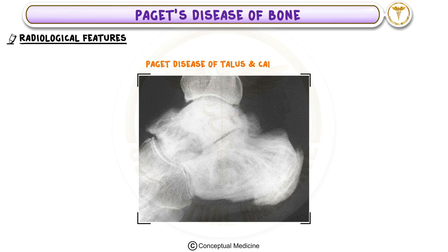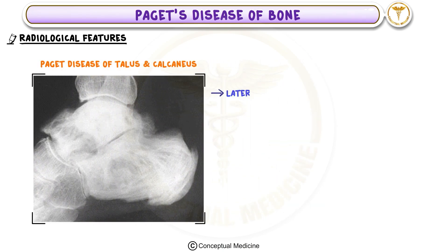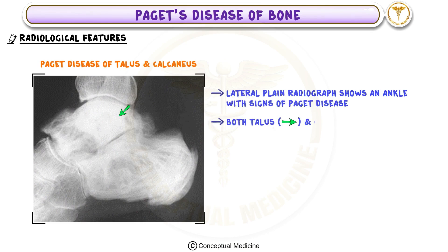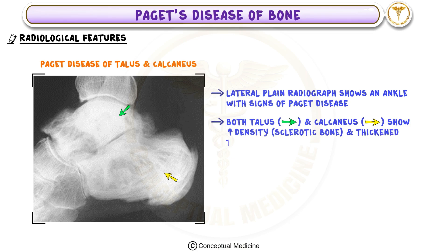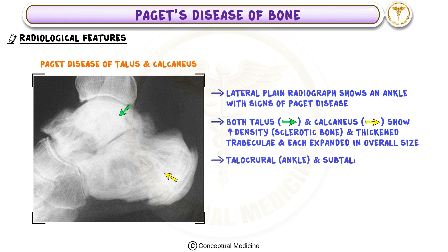Paget's disease can also affect the talus and calcaneus. This lateral plain radiograph of the ankle shows increased density, sclerotic bone, and thickened trabeculae in both the talus and calcaneus, each expanded in overall size. The talocrural ankle and subtalar joints appear relatively normal.